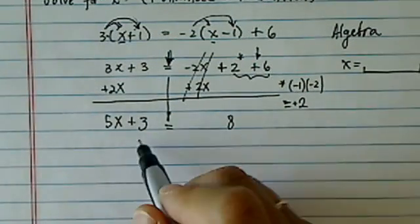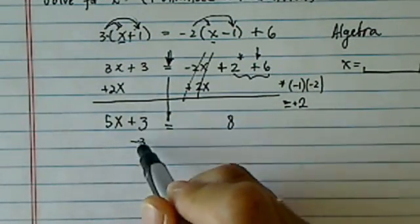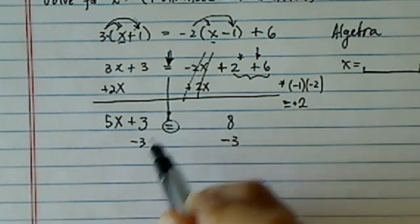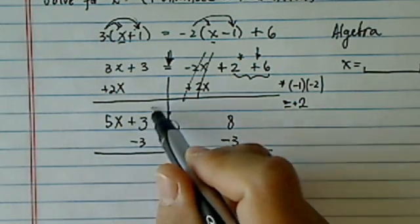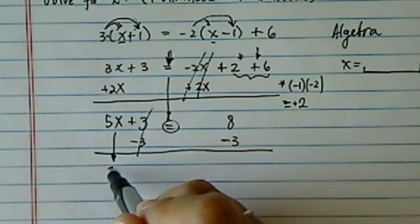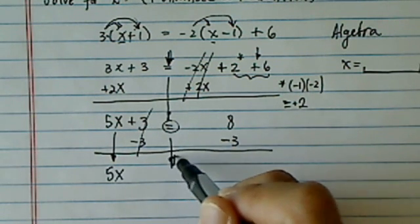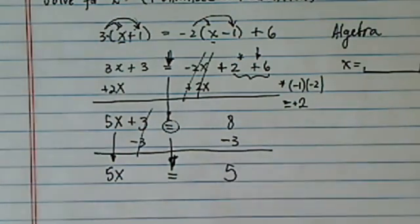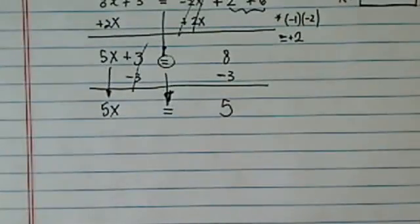Next thing I'm going to do is I'm going to move all the numbers over, since I have a 3 here. Once again, I've got to keep my equal sign. So I subtract 3 on both sides. 5X gets down here. Equal sign gets unchanged. And then 8 minus 3 is 5. Almost there.